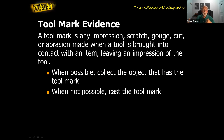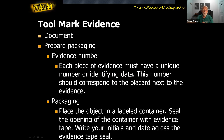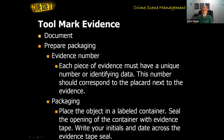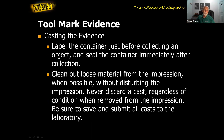If we cannot collect the object that has the mark on it, then we will cast the tool mark. When we have a tool mark, we document it, add it to our notes, give it an item number, take photographs, add it to our sketch with the same number, and complete a property report. We eventually collect the item or the cast, place it in a labeled container, seal it properly, and initial and date the seal.